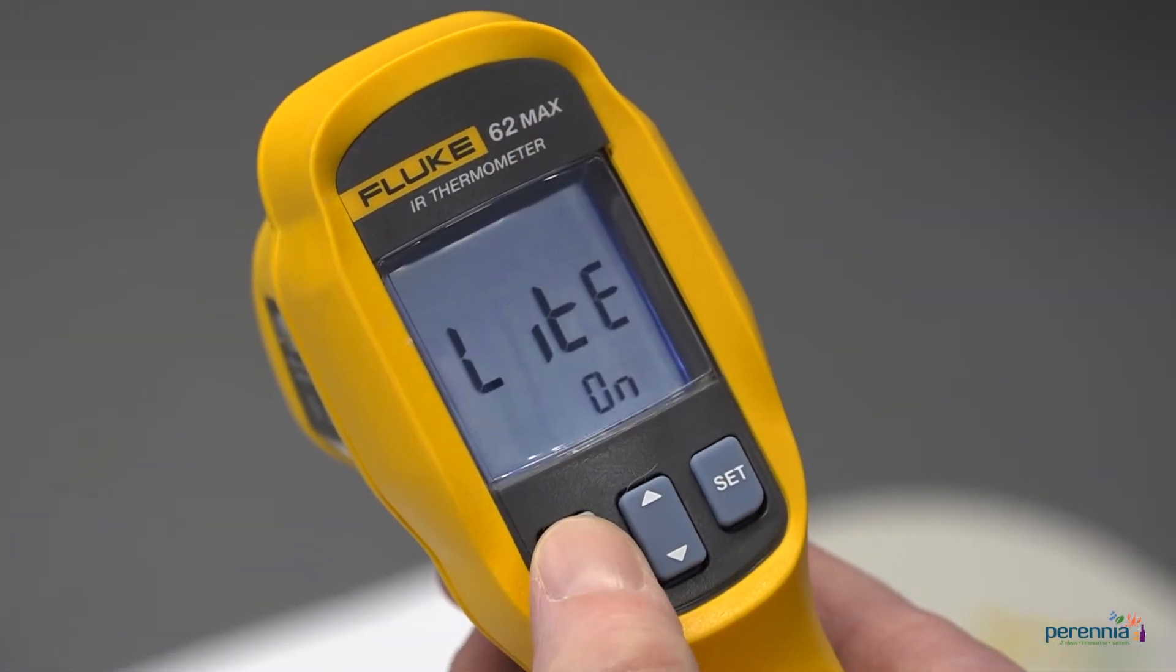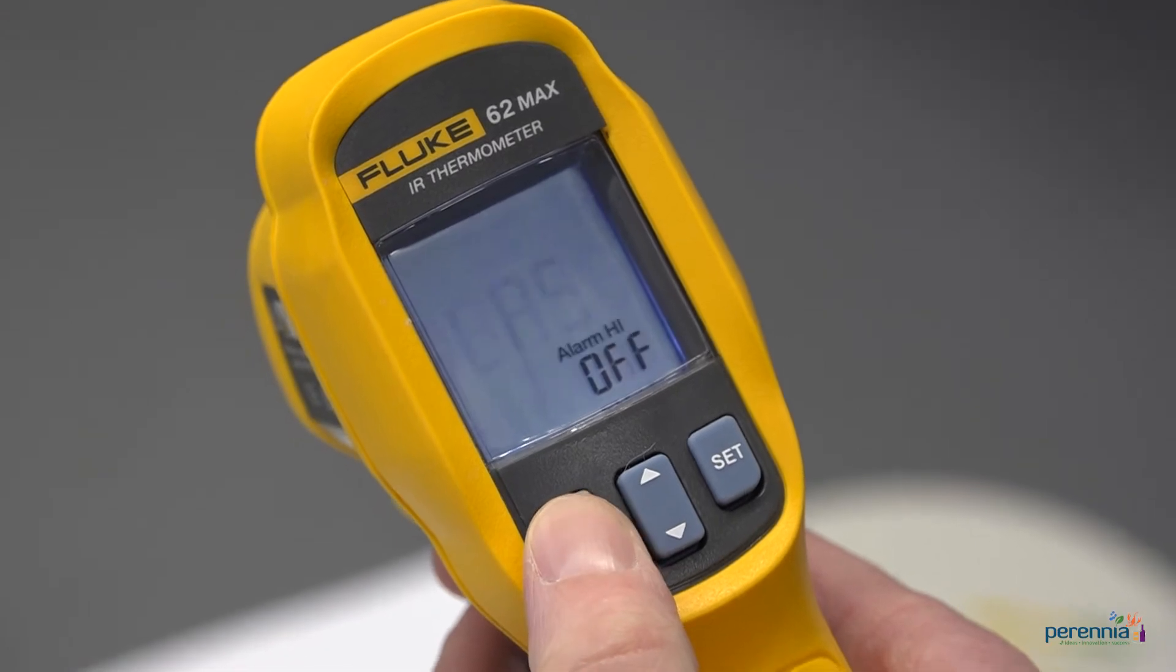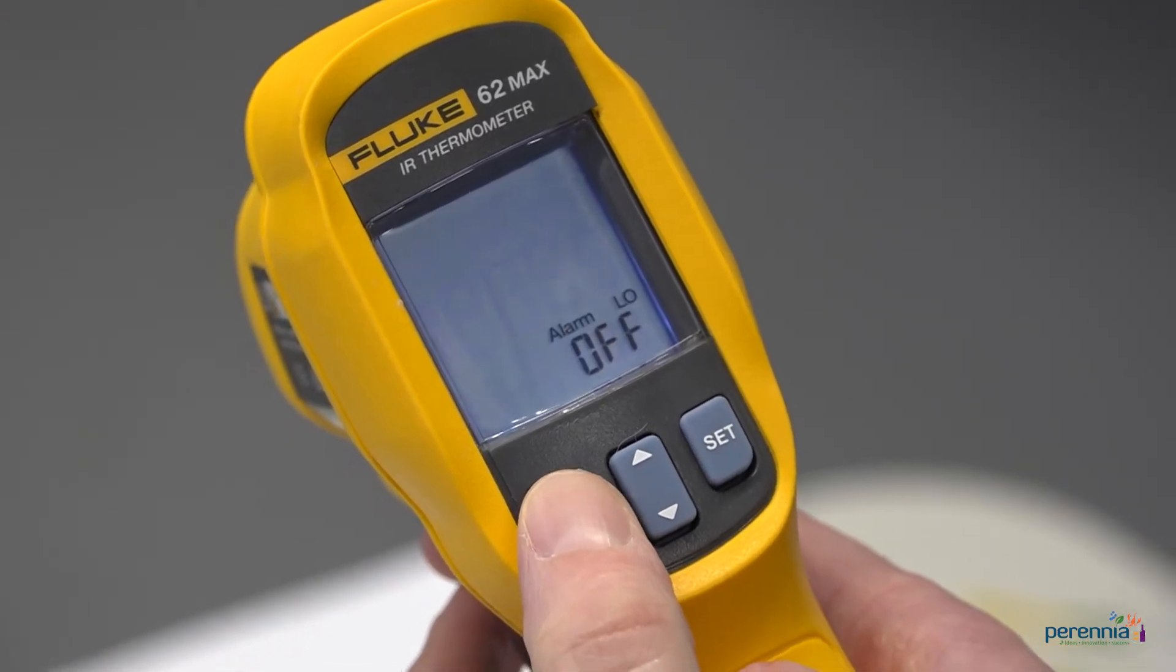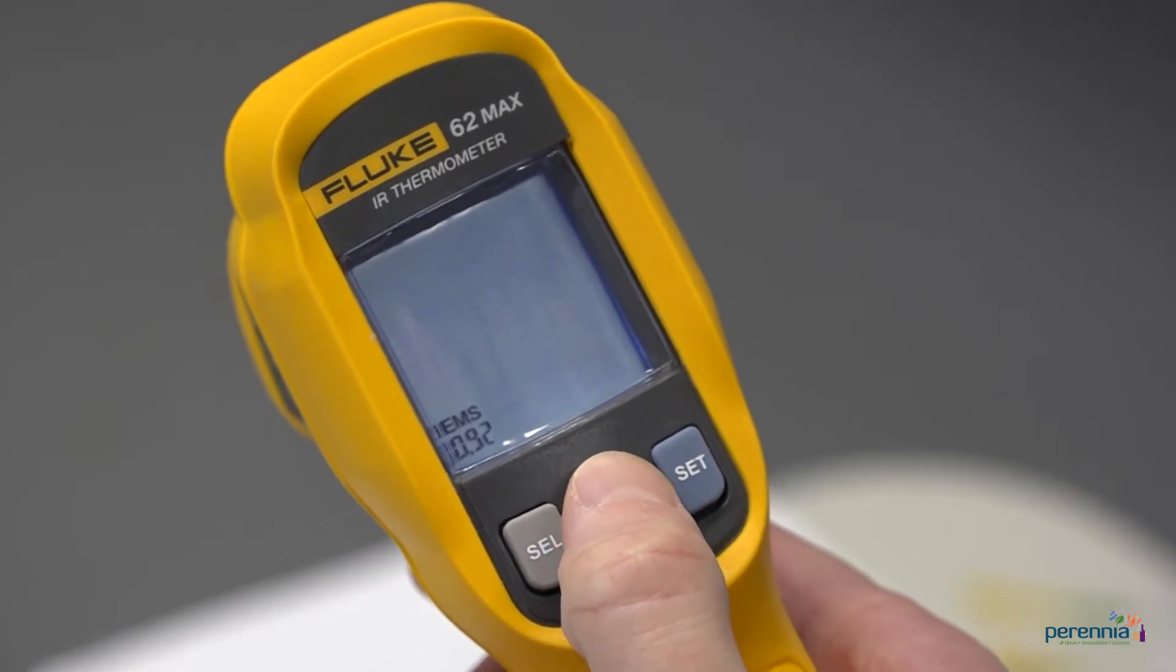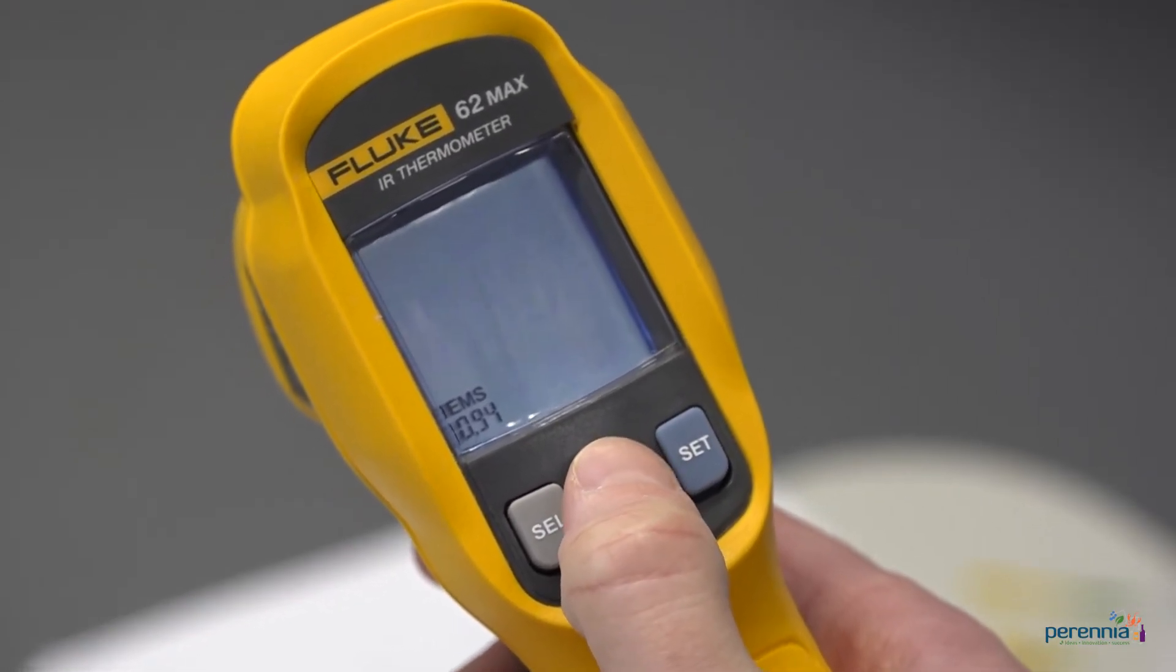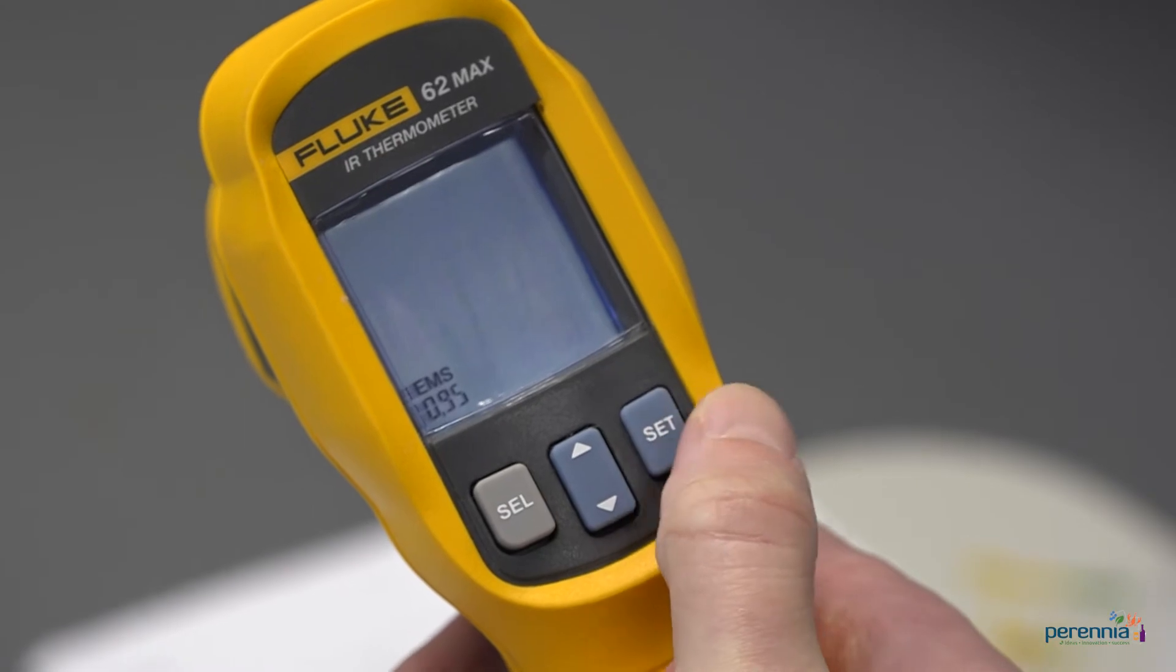Step four, set the emissivity to 0.95. Push the select button, SEL button until EMS is shown. Adjust to 0.95 by pressing up or down and change by pushing the set button.